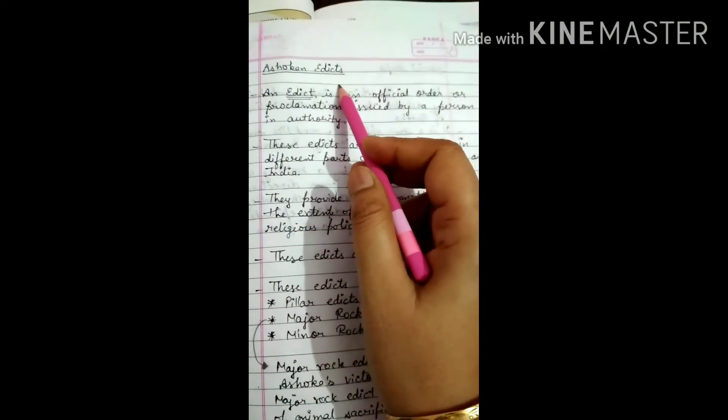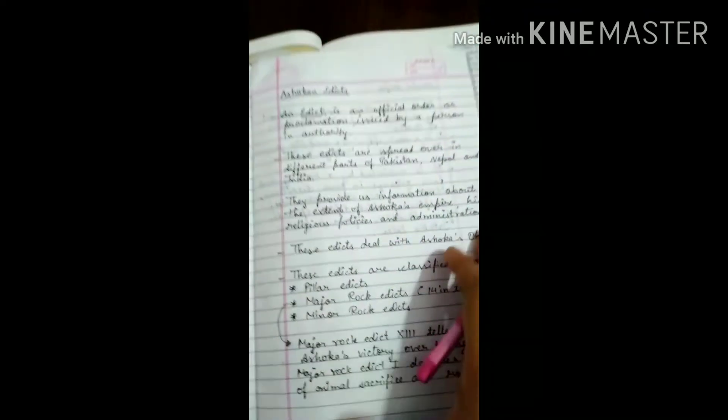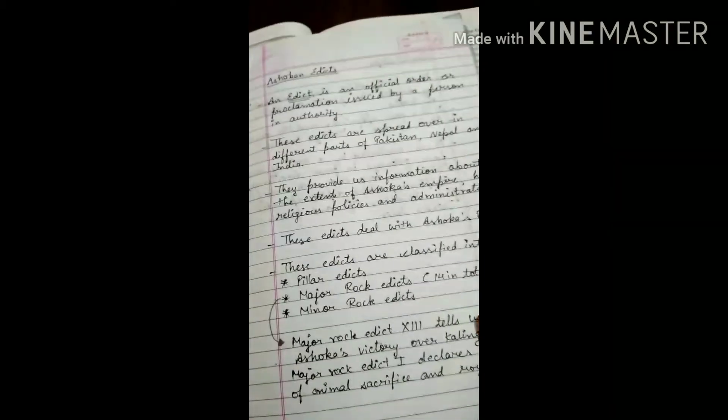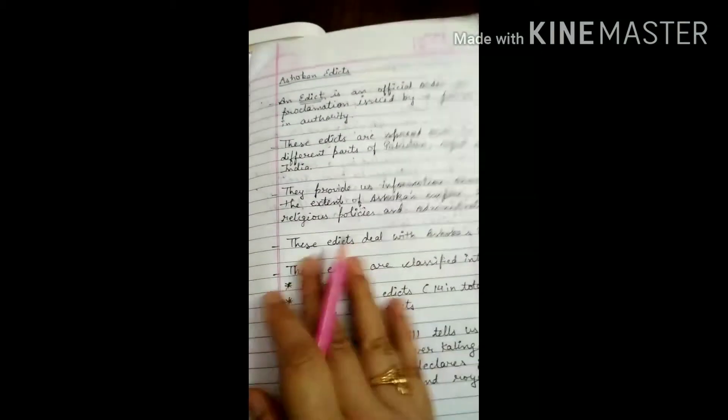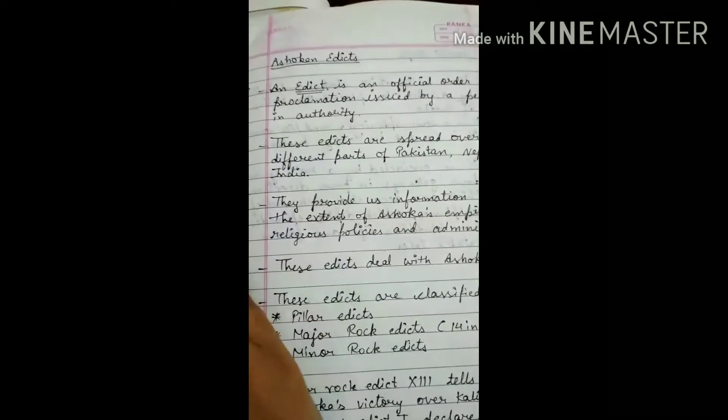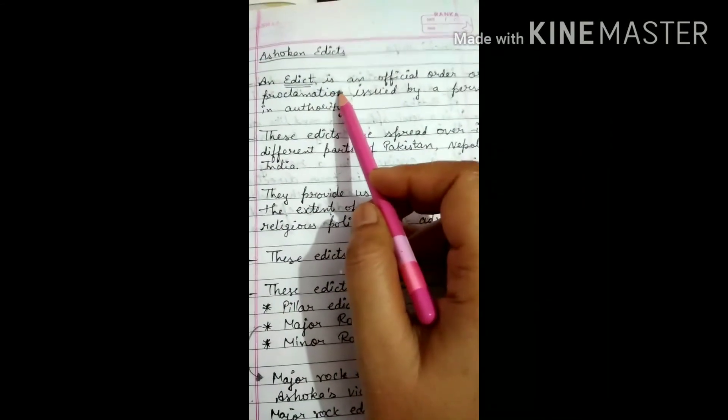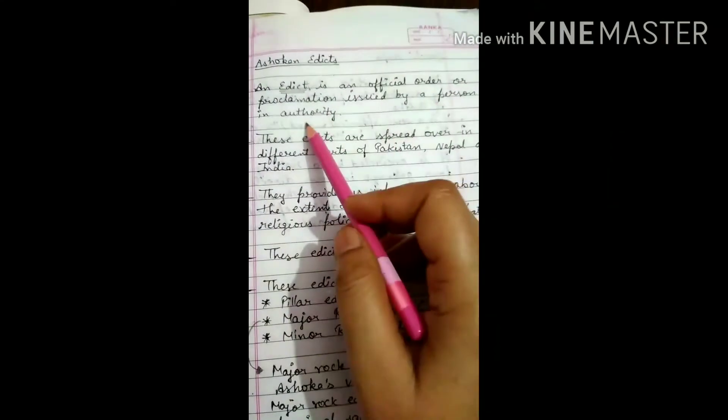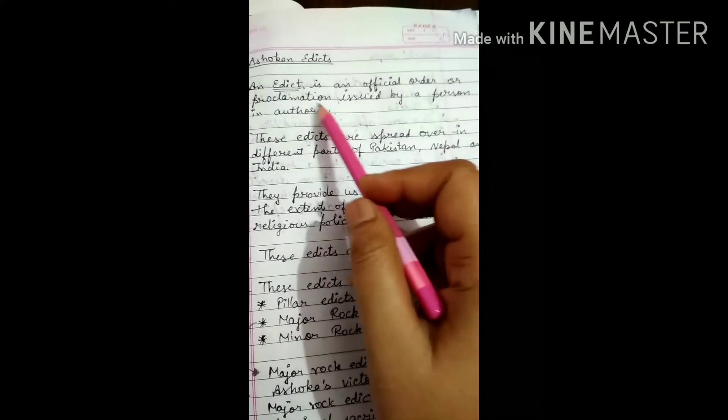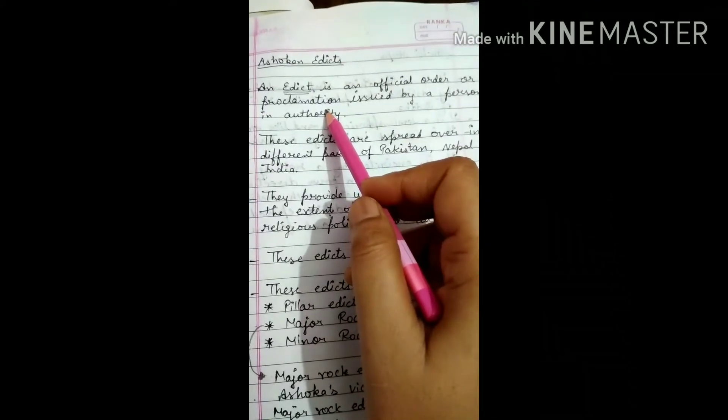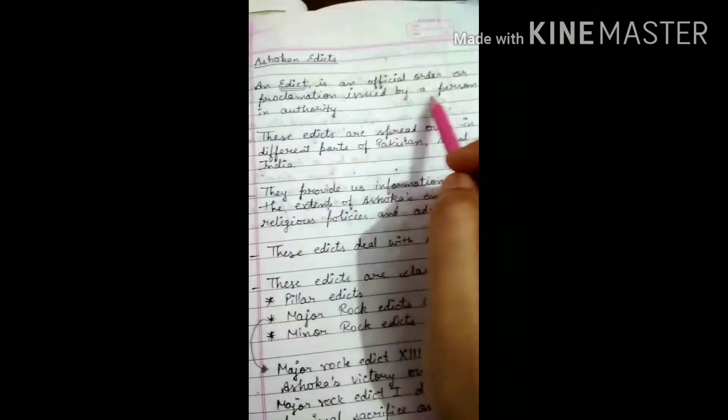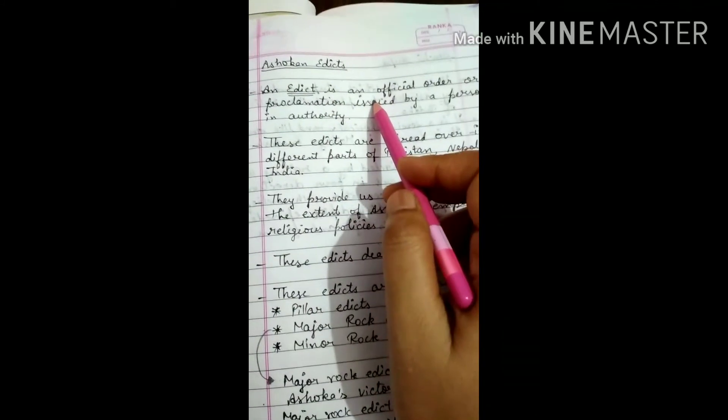Now come to the archaeological sources. What are the archaeological sources? First of all, Ashokan Edicts. You all know Ashoka was a great ruler of India. He was placed on the flag of India. The center wheel is called Ashokan wheel. Ashoka was a great ruler of India. What are the edicts? An edict is an official order or proclamation issued by a person in authority. Official order or announcement issued by a person who is in authority.